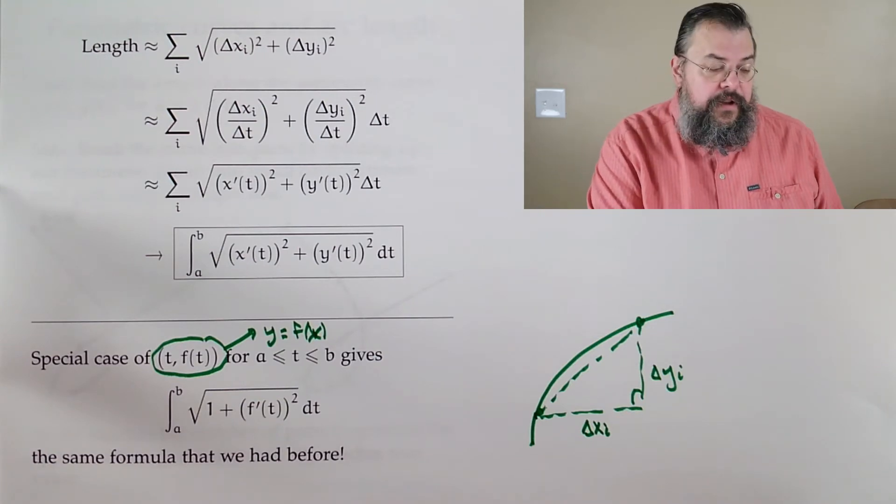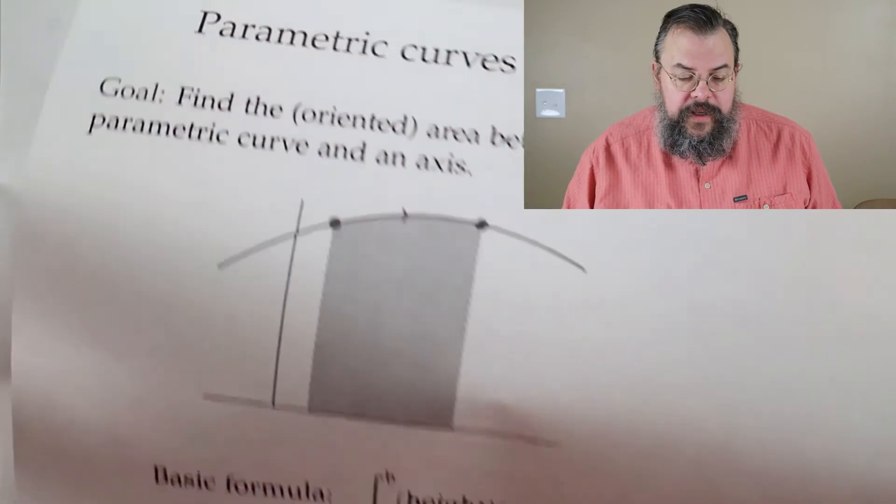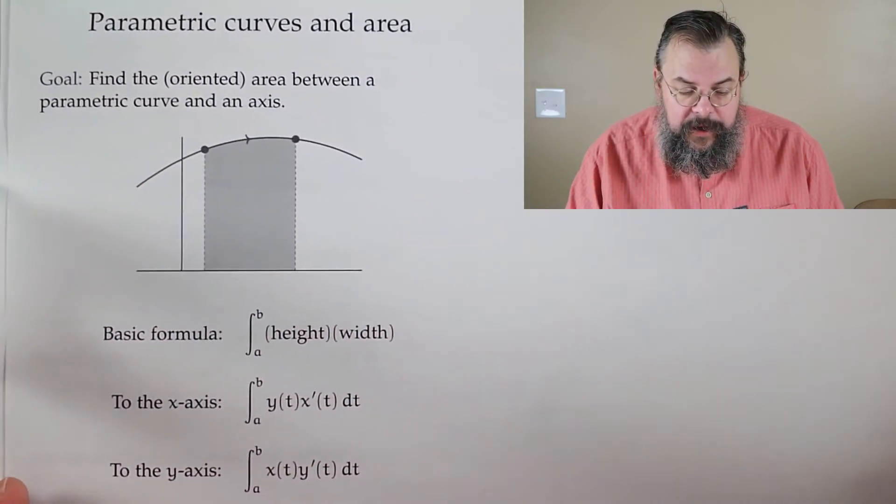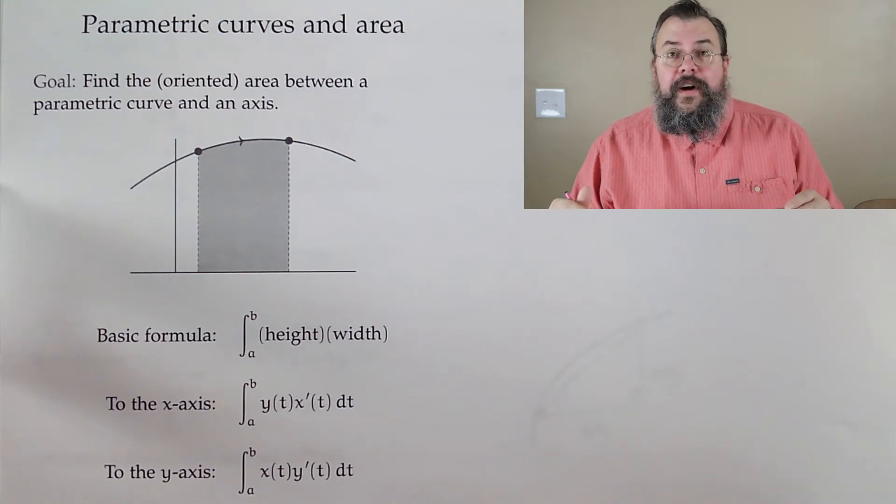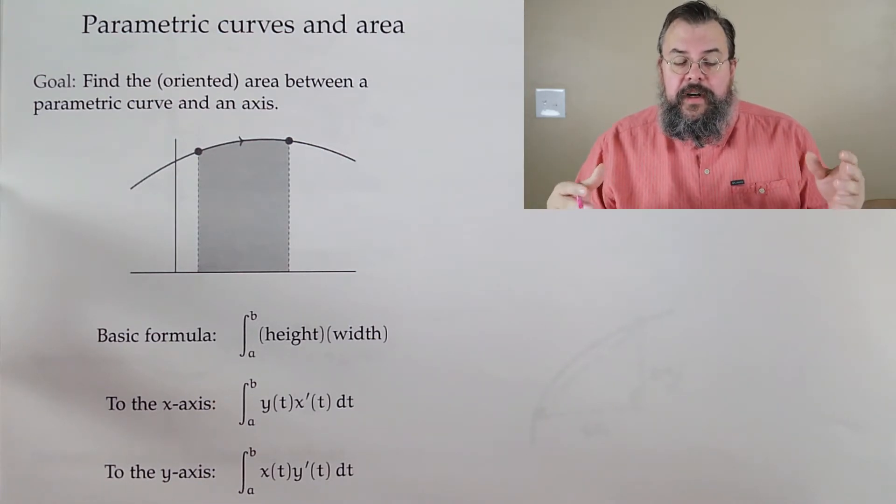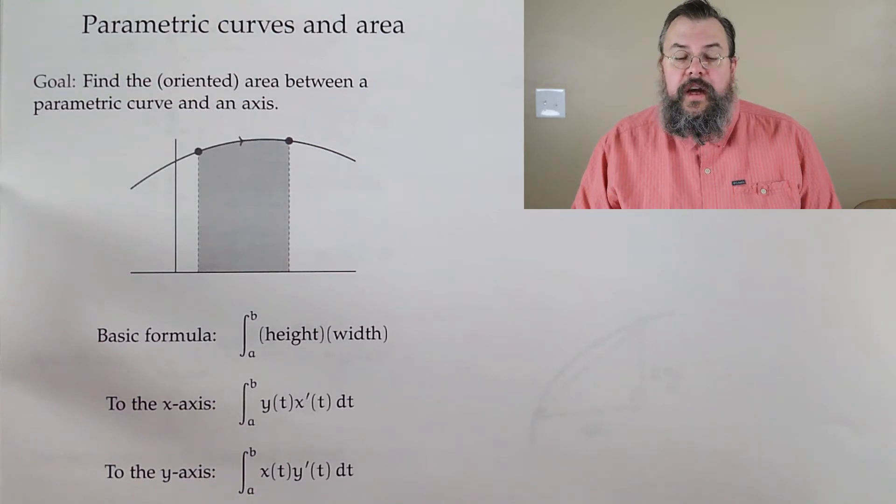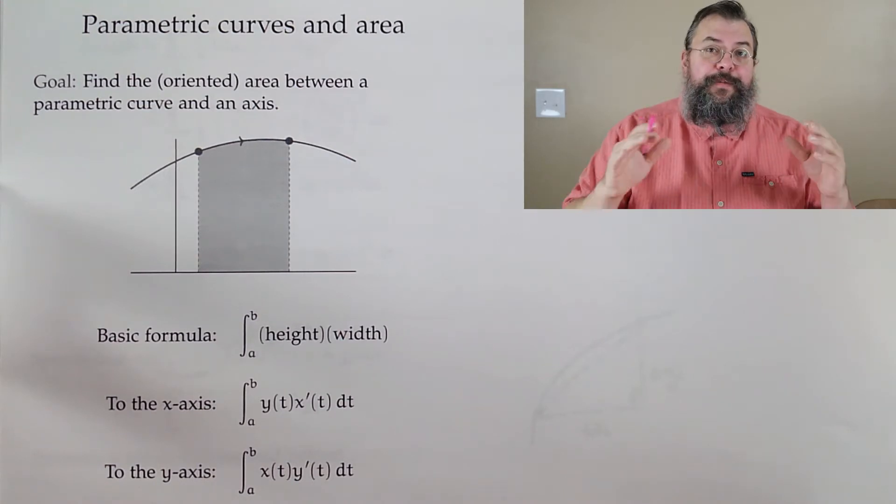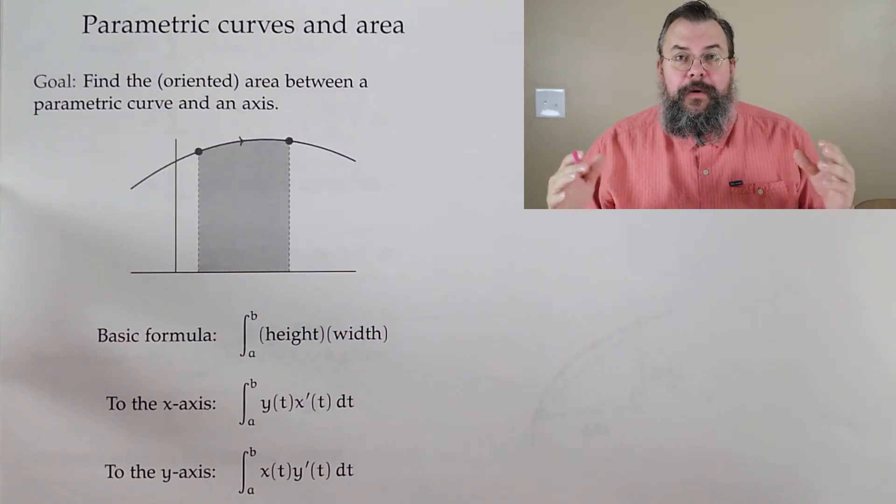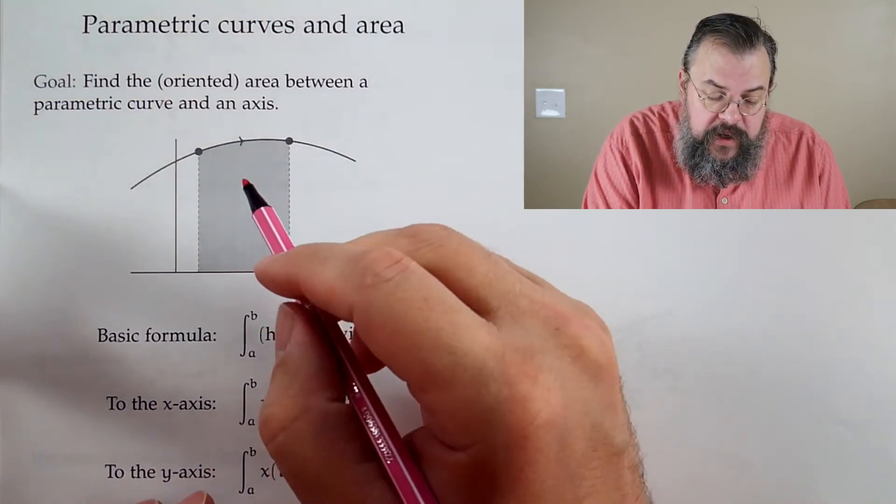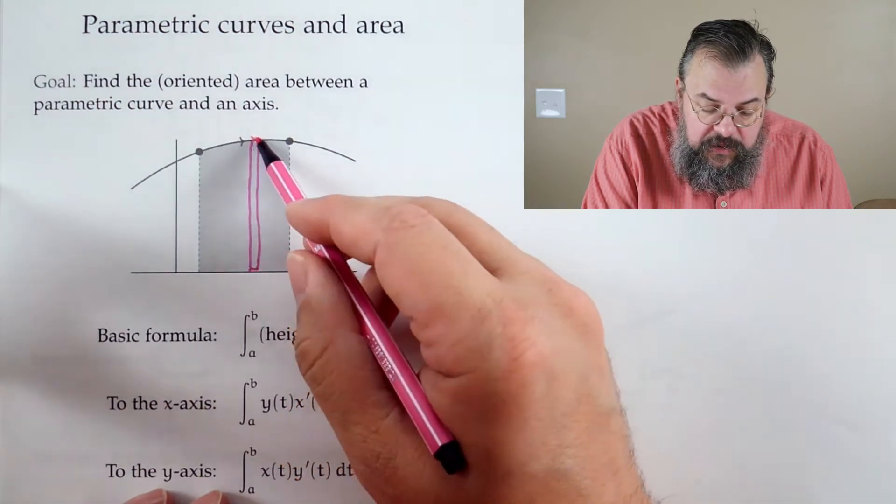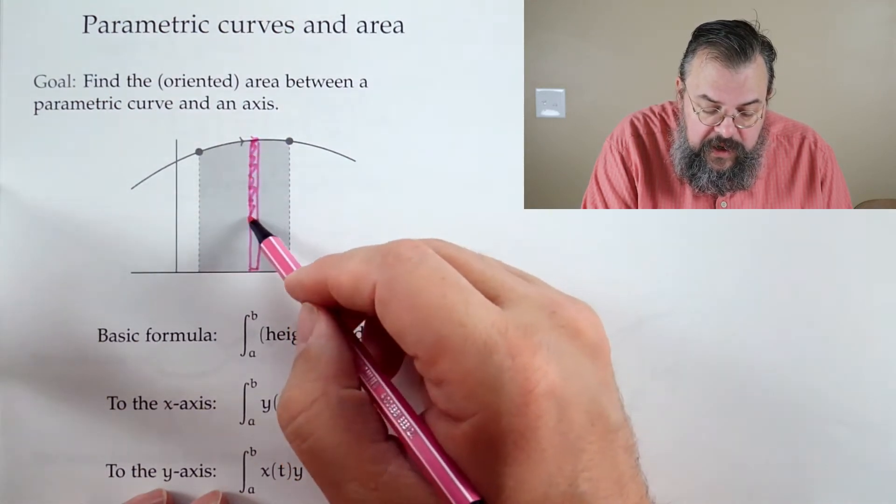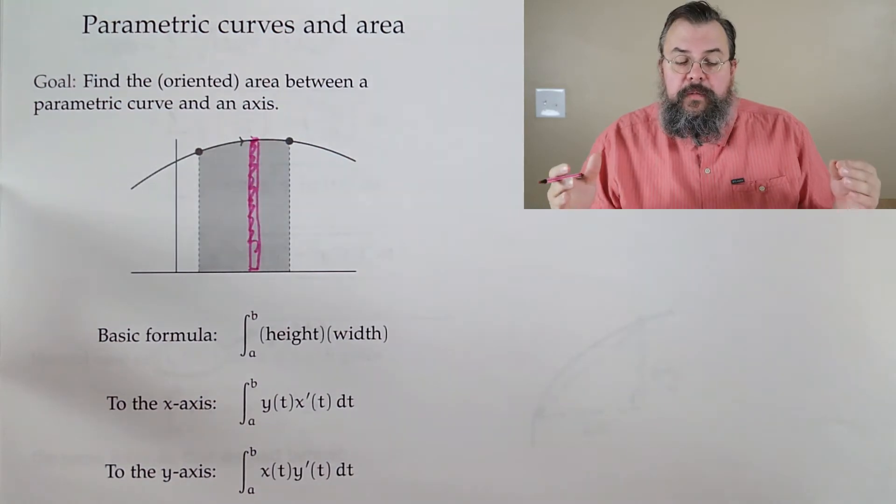Now let's tackle area. Our goal is to find the area between a curve and an axis. It doesn't really matter which axis we go to. How do we find area? This goes way back to Calc 1. We say we found area by thinking of breaking things up into little tiny rectangles. Here's a little tiny rectangle. We'll find the area of this little piece and then we'll add up our little pieces together.